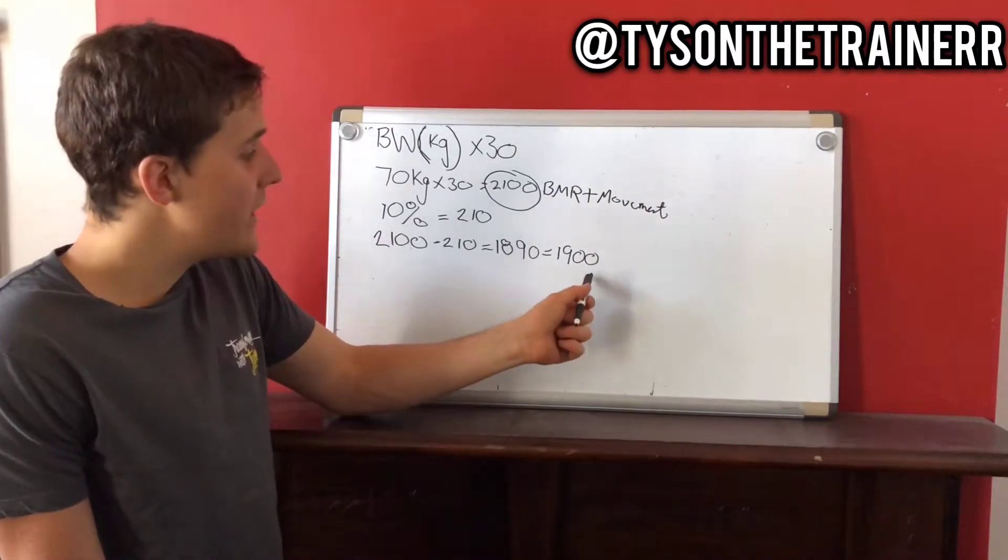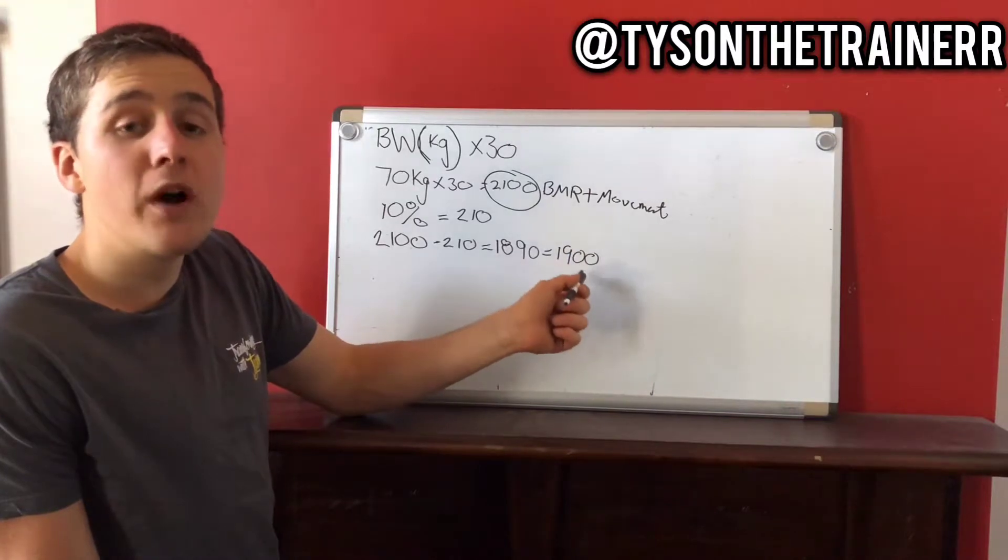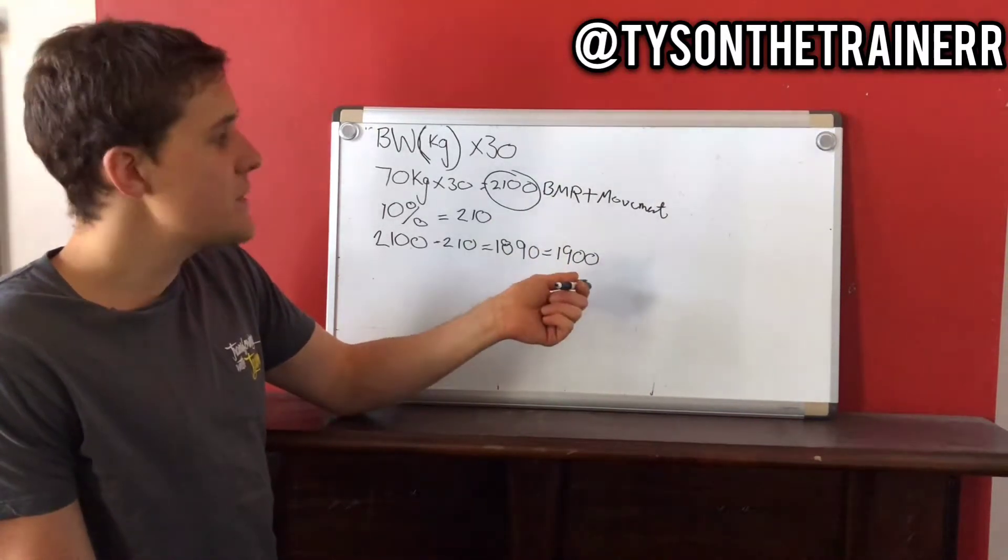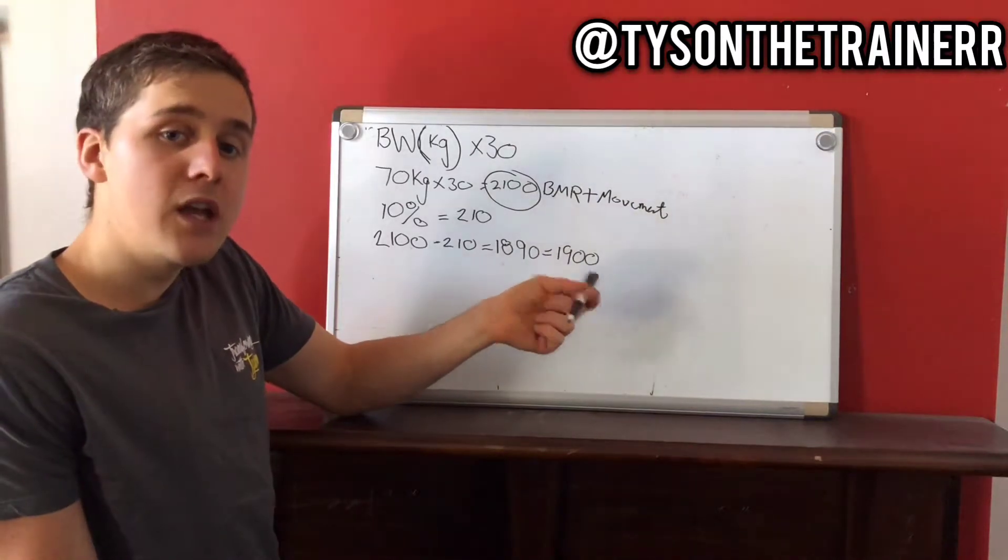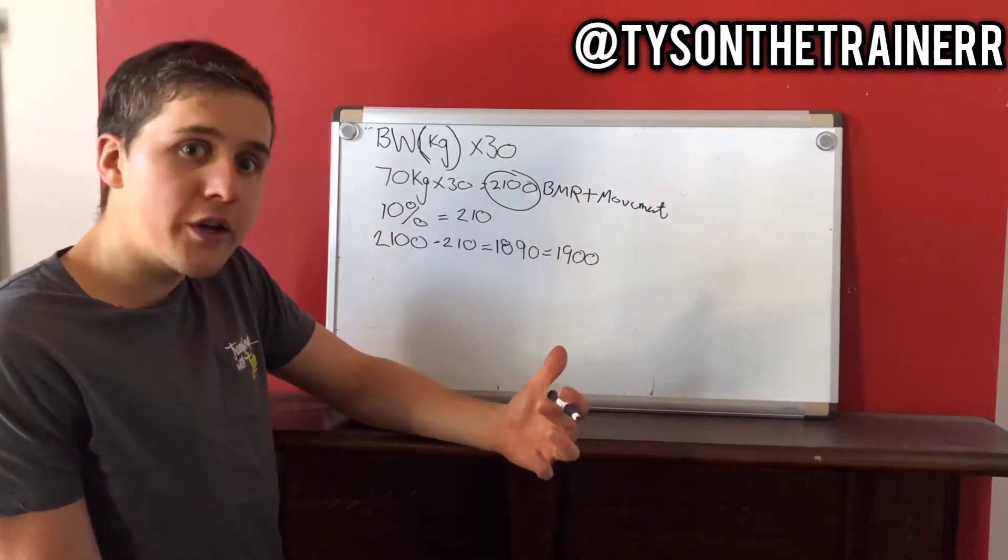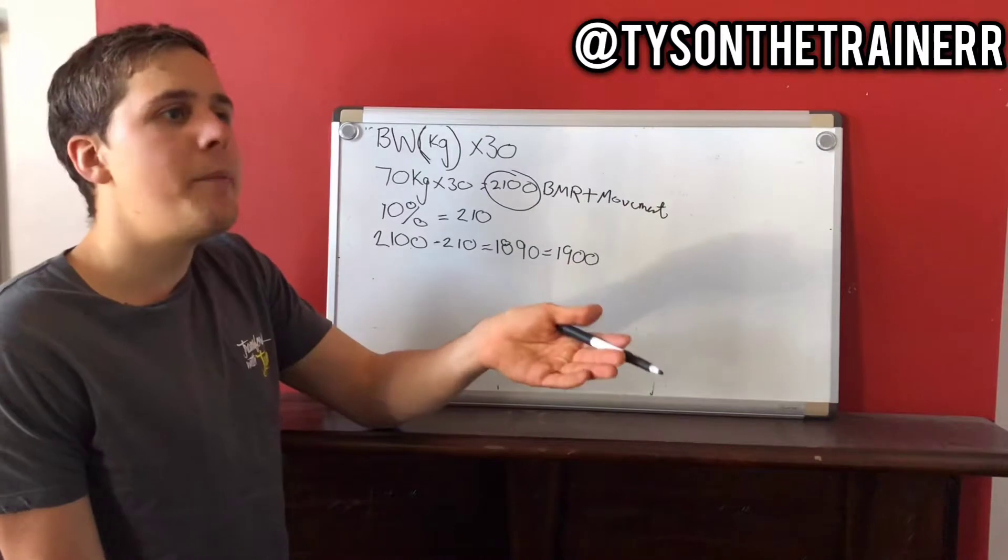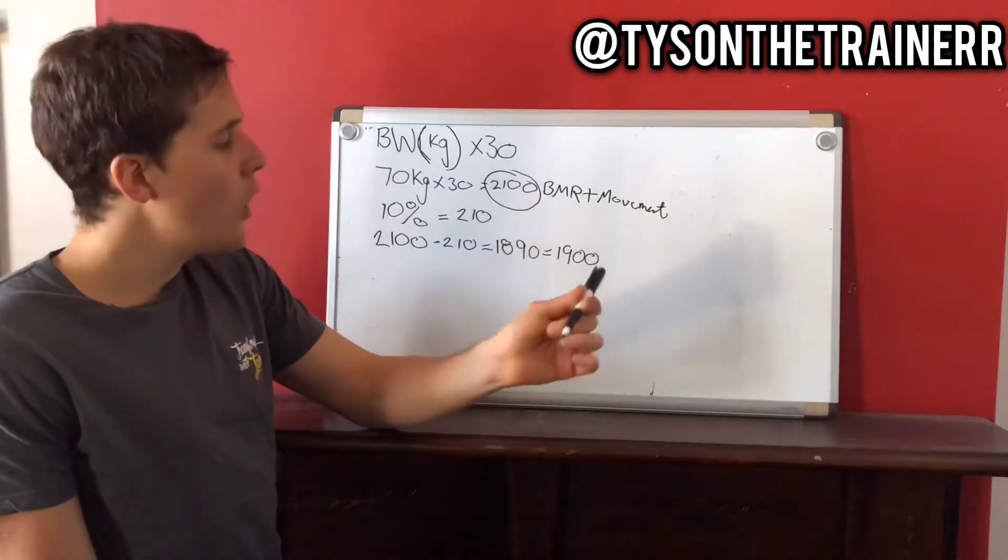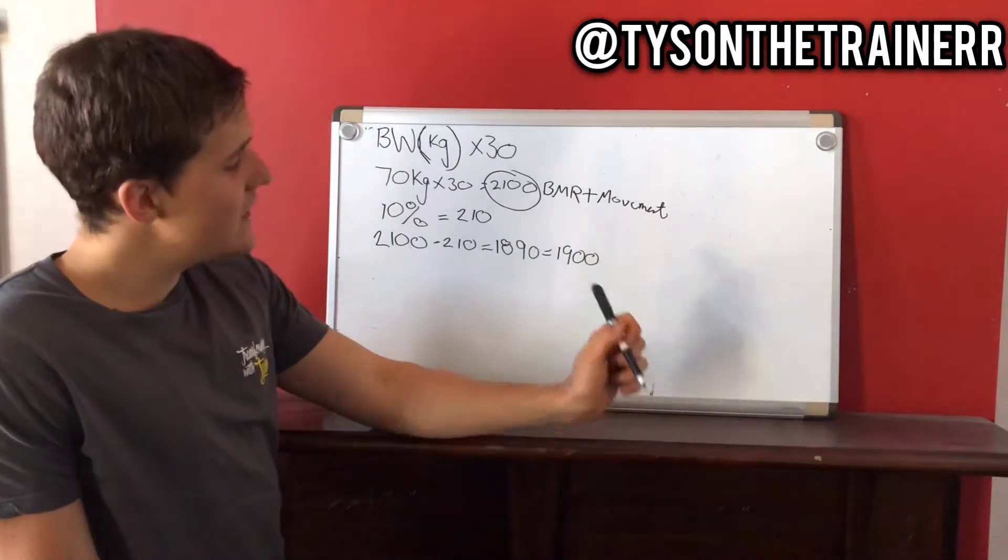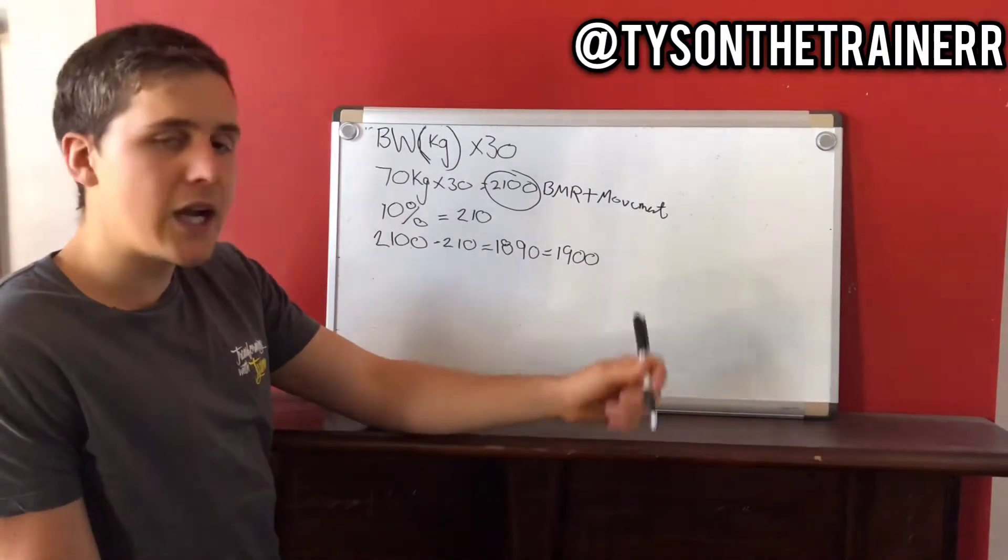Now the way to track this is to use an app called MyFitnessPal. And what MyFitnessPal does is that it allows you to be able to track how many calories you're using every day so you can see what you're actually eating. Because a lot of people, they go, I'm eating healthy, I think I'm eating the right things, but I still can't be losing weight. When you start to track on MyFitnessPal, you're probably going to see that you're eating a lot over 1,900 calories.